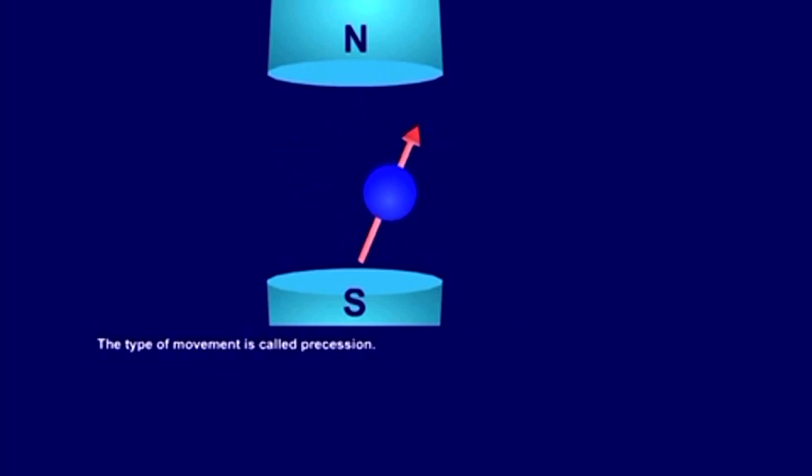What type of movement is precession? Just imagine a spinning top. When you hit it, it starts to wobble or tumble around. It doesn't, however, fall over.